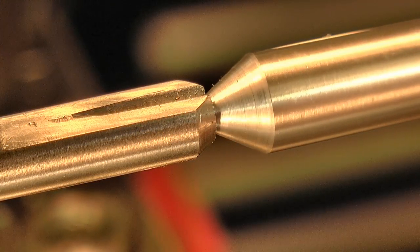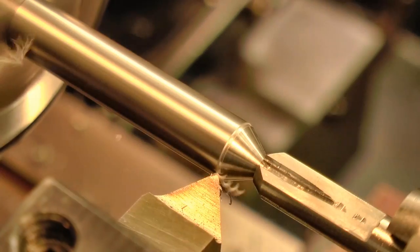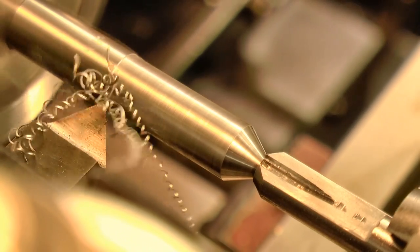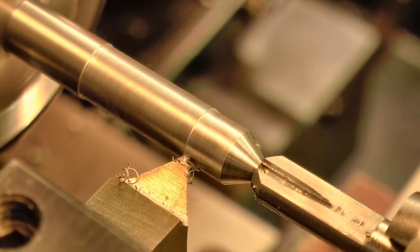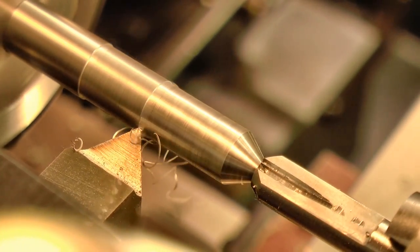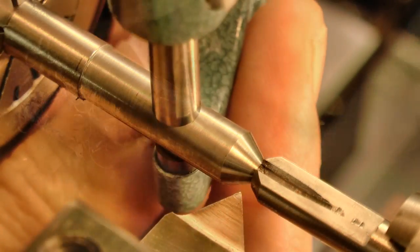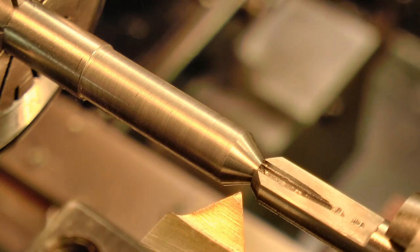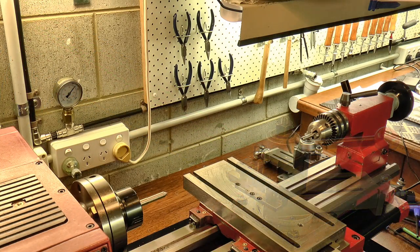This little custom made hollow support sits in the drill chuck. It provides just enough support to stop the work deflecting under the cut. So I turn the outside to the correct diameter, and then set up the cutting gear on the lathe.